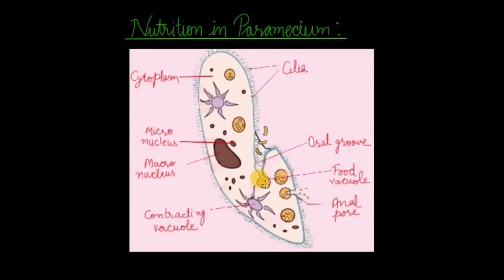Inside this food vacuole, the food is digested and absorbed. This food vacuole circulates in a fixed route inside the cytoplasm of the paramecium, and the food is absorbed after digestion. Undigested waste is left in this food vacuole, which approaches near the cell membrane. The undigested waste is removed out from the cell through a small pore known as the anal pore. So this is how nutrition occurs in paramecium.